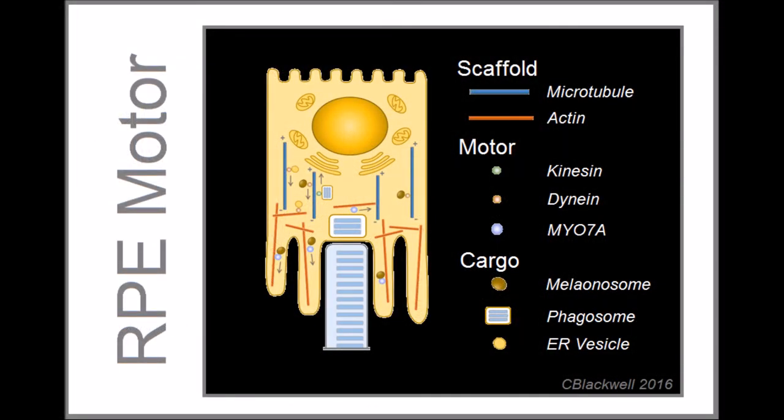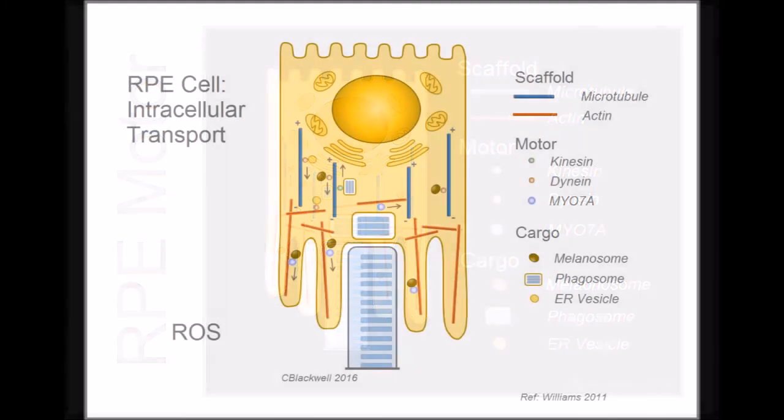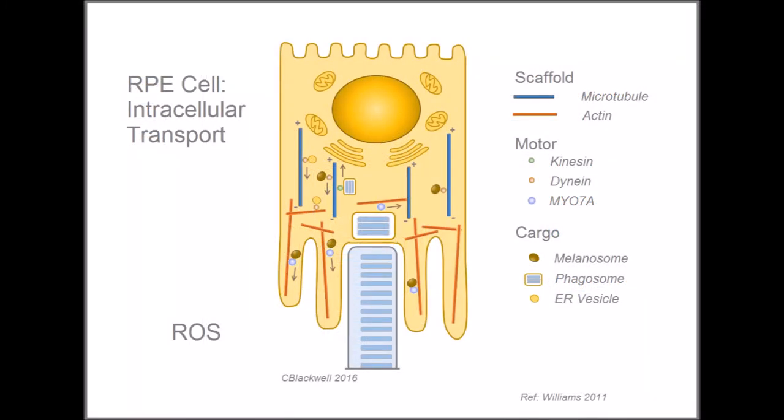Before we finish, to show how connected biology is, we will briefly show the motors in the RPE cell. The kinesin motor that we saw before is carrying its cargo, a phagosome, along a microtubule toward the plus end. The dynein motor is also carrying its cargo along microtubules, but toward the minus end. In this example, carrying a melanosome and vesicles from the endoplasmic reticulum.